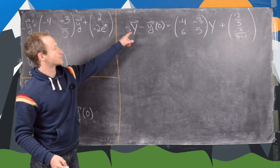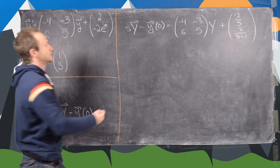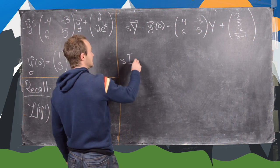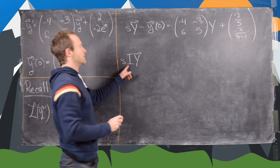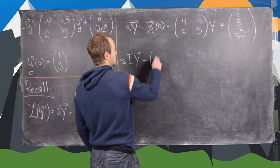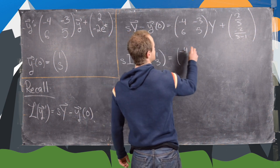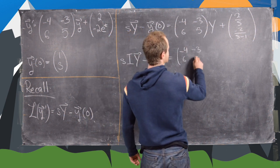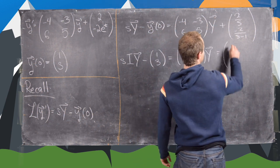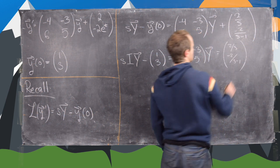Now we replace the initial condition with what we know it is. Writing the s term as the identity matrix times Y, we get s·I·Y minus [1; 3] equals the matrix [-4, -3; 6, 5] times Y plus the vector [2/s; -2/(s-1)].